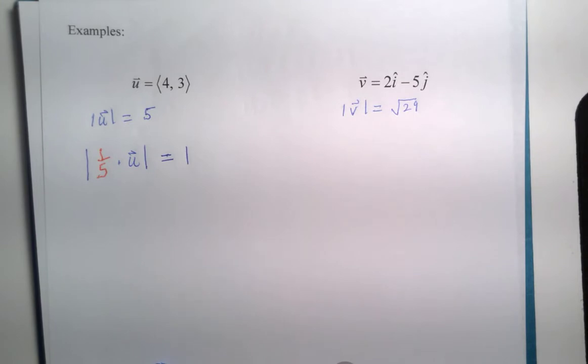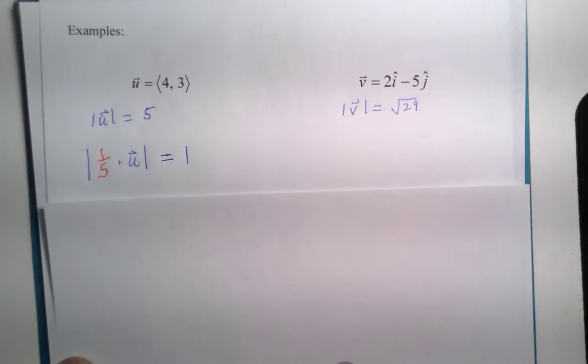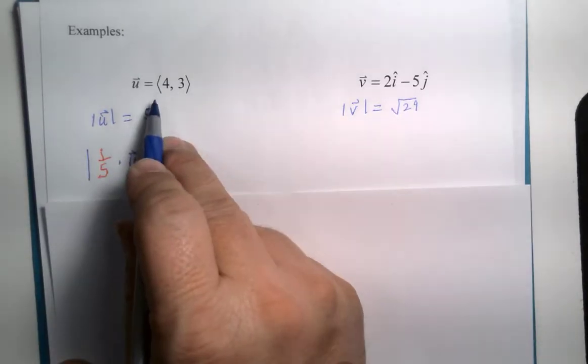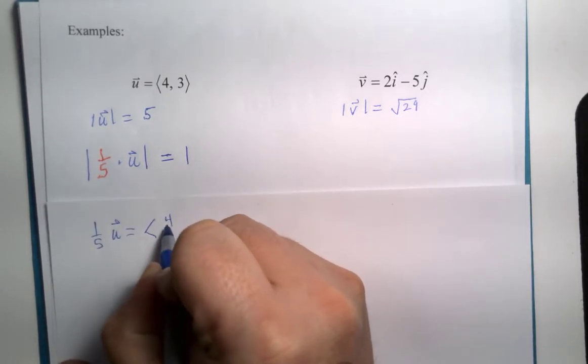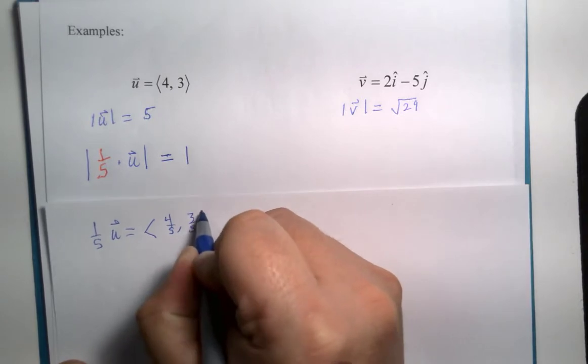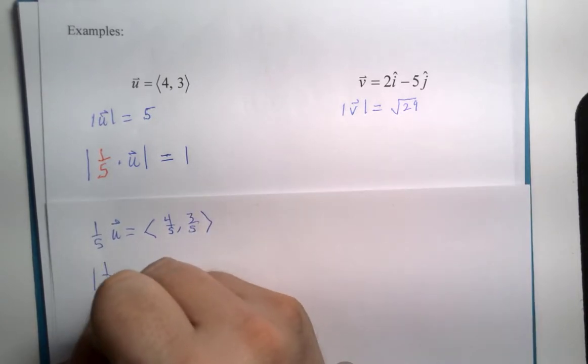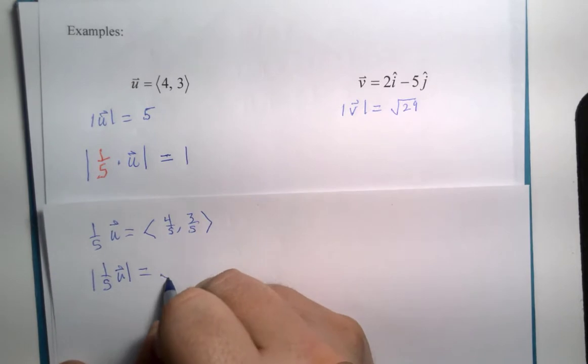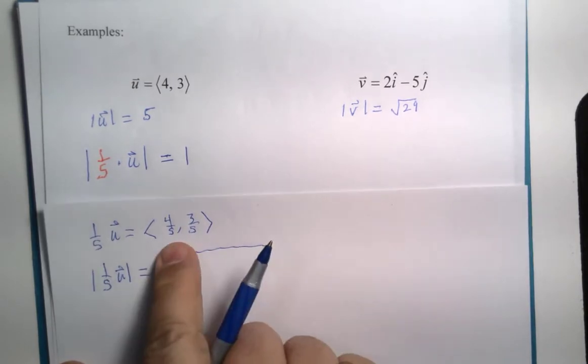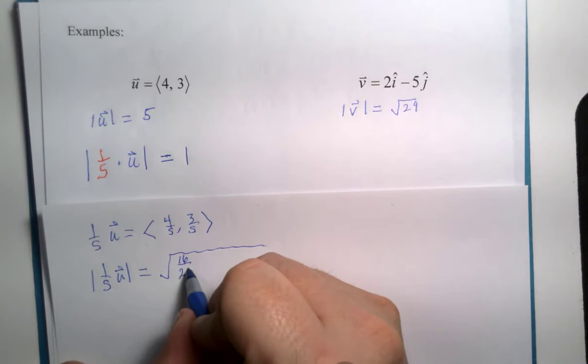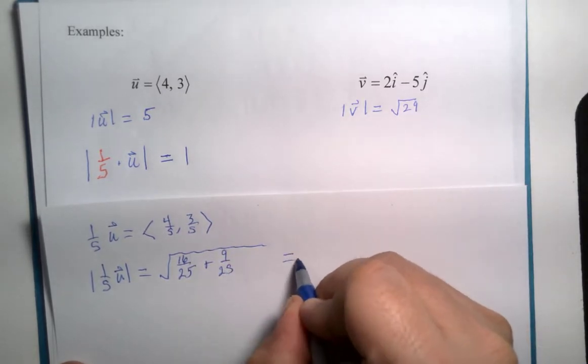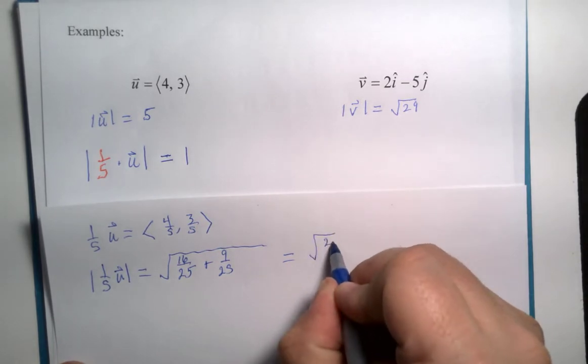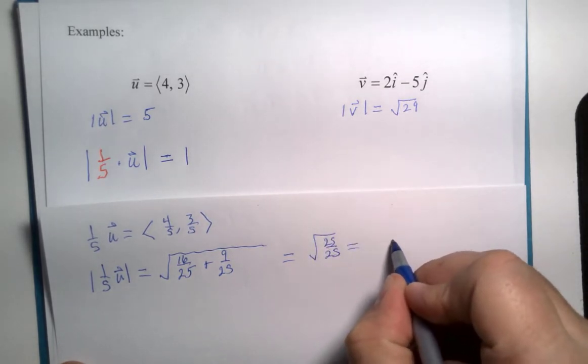Let me just grab a piece of scratch paper here and let's see if that is true. So, multiply by 1 fifth. That would be 4 fifths comma 3 fifths. Magnitude of that would be square root of 4 times 4 is 16, 5 times 5 is 25, 3 squared is 9 over 25. Square root of 25 over 25 is the square root of 1, which is 1.